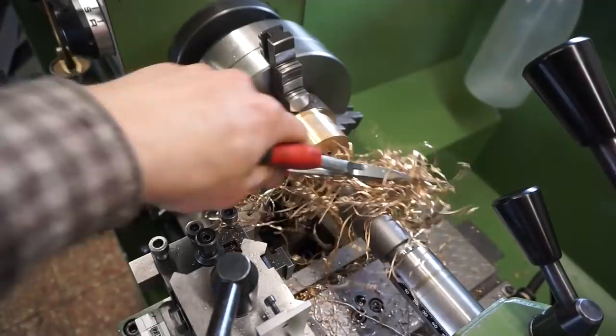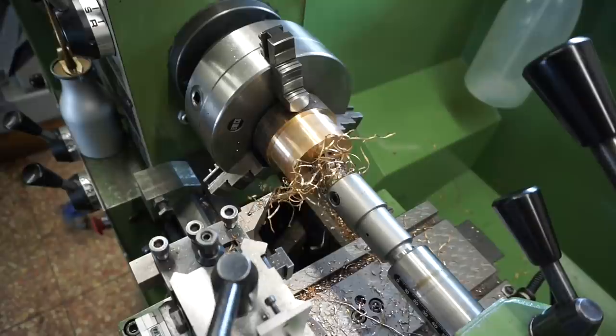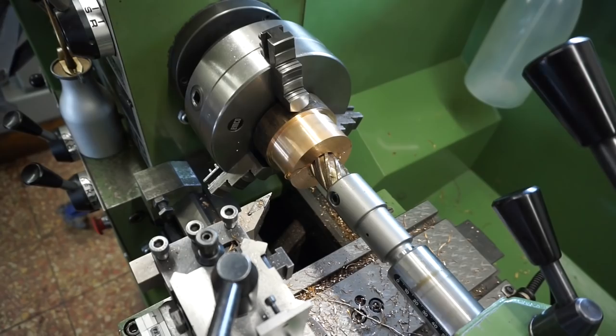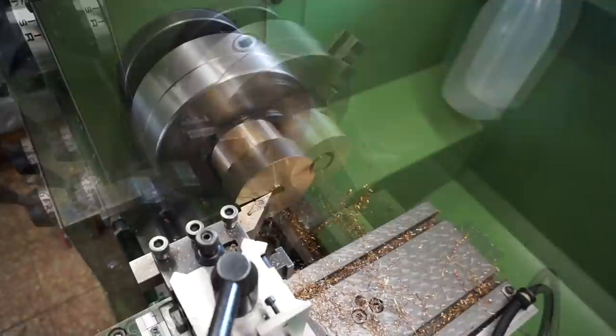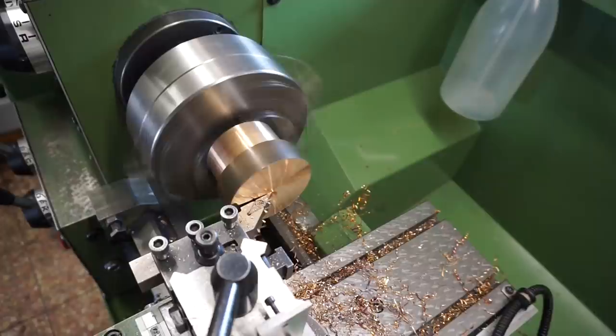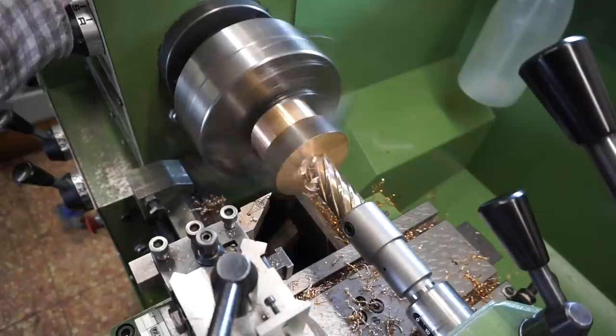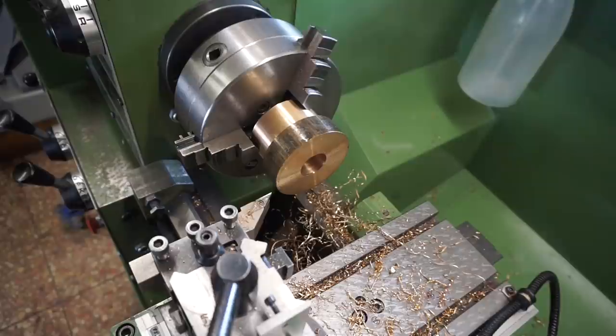Now comes broaching out the hole. This is good practice here since it leaves a slug of material that can't be used otherwise. Nothing annoying happens in Alex's shop. So that's as deep as I can broach from this side. Then inverting the part, facing again, and broaching out the rest of the slug.